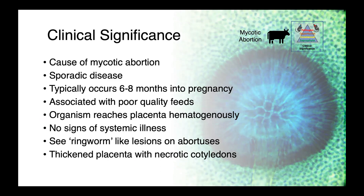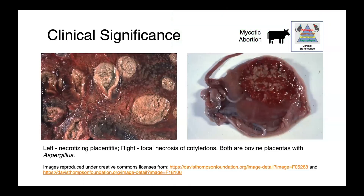The placenta is thickened with necrotic lesions, and on the abortuses, we can see ringworm-like lesions or plaques associated with fungal growth. In these images here, you can see sections of bovine placenta from animals who aborted.